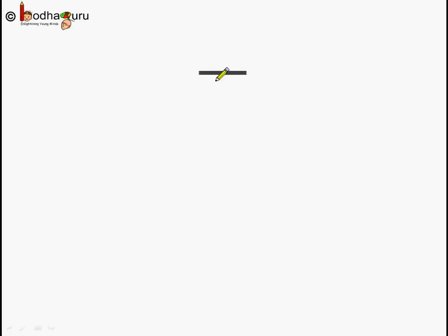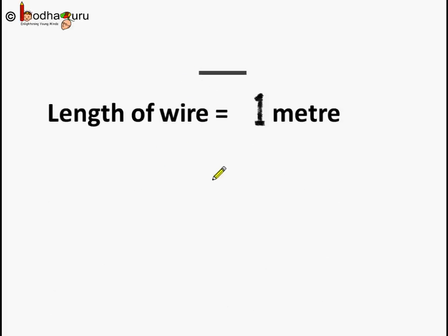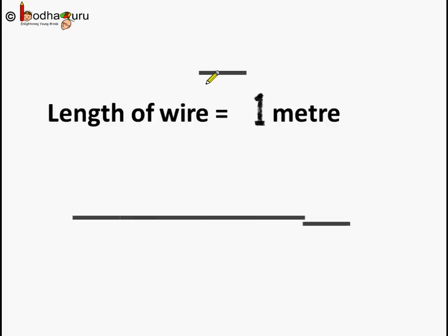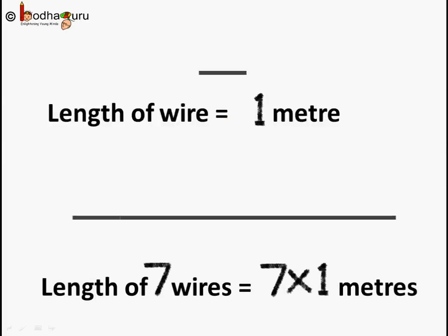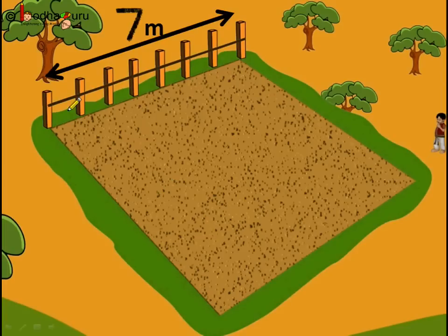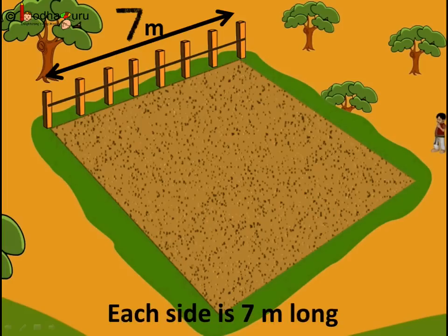Now suppose the length of the small wire used for fencing is equal to 1 meter. If we line up 7 wires in one line without any gap and without any overlap, we see: 1, 2, 3, 4, 5, 6, 7. So the length would be equal to 7 times 1 meter, which is equal to 7 meters. Coming back to the farm, the length of the wire used for fencing each side would be 7 meters, as each side is the same and it is a square shape.